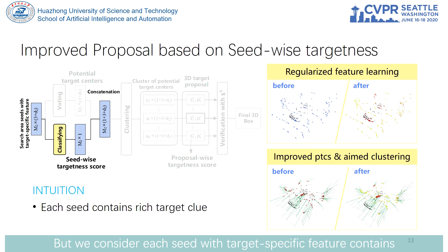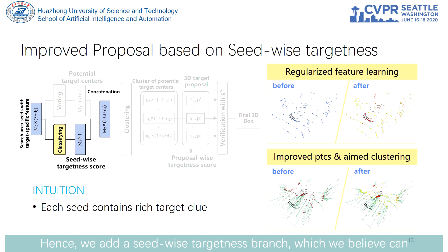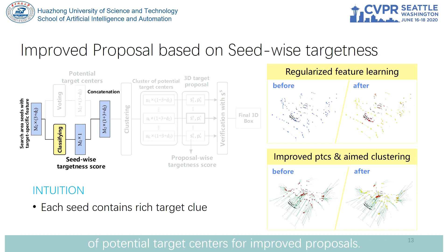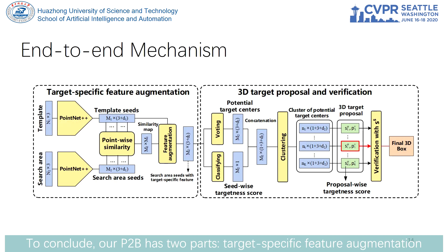We consider each seed with target-specific features contains relevant target clues and can be assessed by its target-ness. Hence, we added a seed-wise target-ness branch, which we believe can regularize earlier feature learning and strengthen the representation of potential target centers for improved proposals.